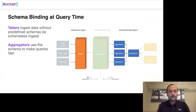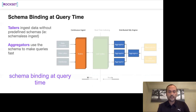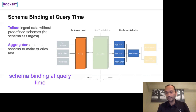Schema binding happens at query time — it's a fully SQL API with joins, aggregations, sorts, and all SQL types. For example, Rockset supports eight different SQL datetime variants, and you can make pure SQL queries against those. People do use all these various SQL date-time types.